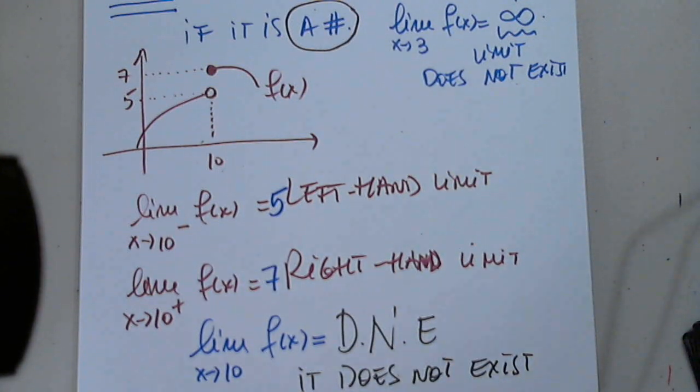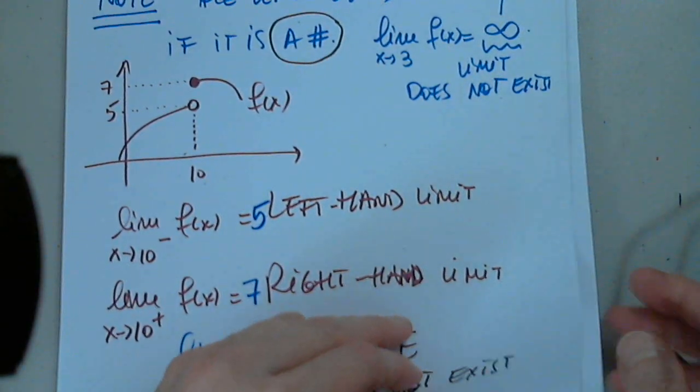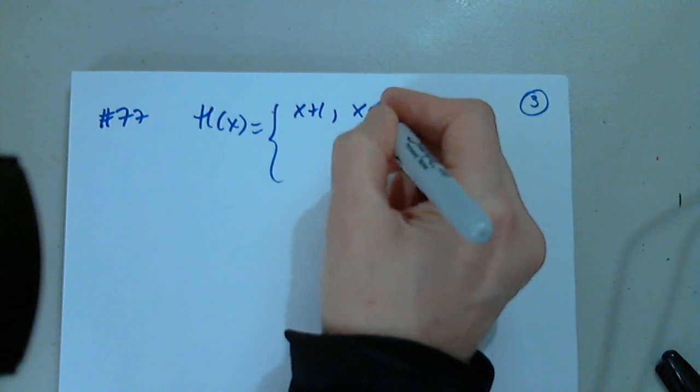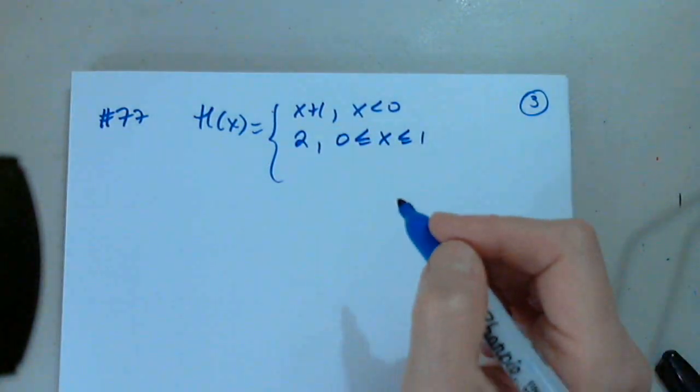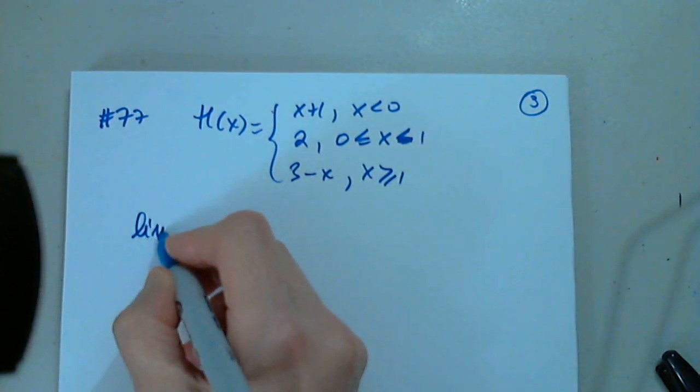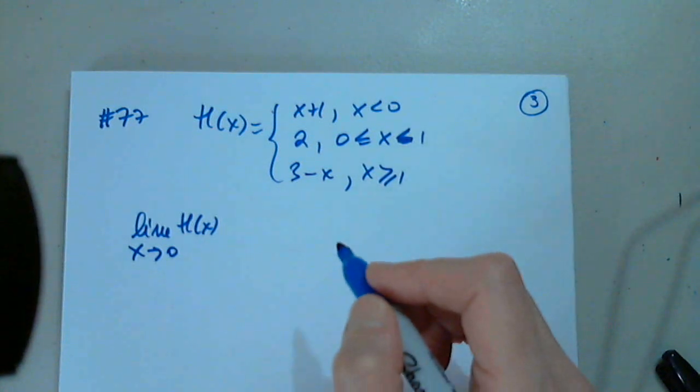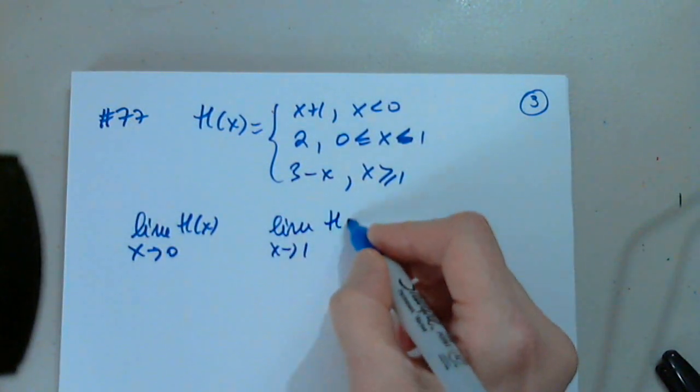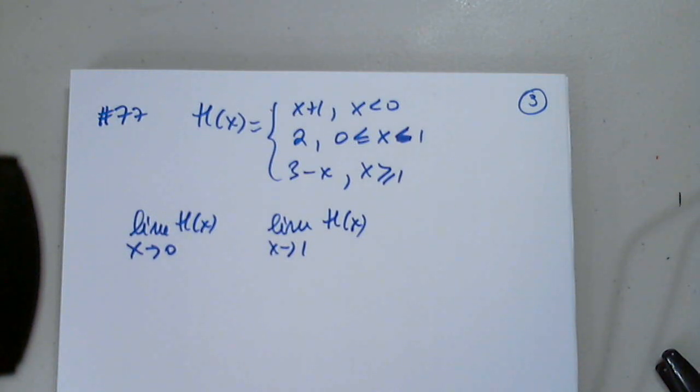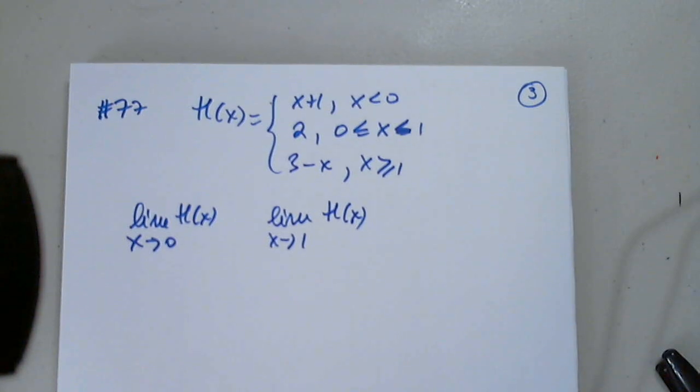I would like to graph another piecewise defined function because you see how important this is. We did this in chapter R, but let's do one more. Maybe now it's going to be easier to understand if you see it again, the method that I highly recommend.